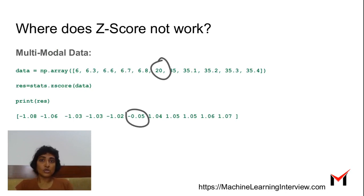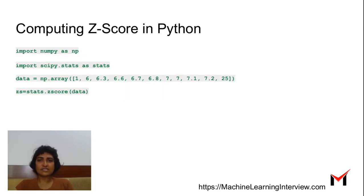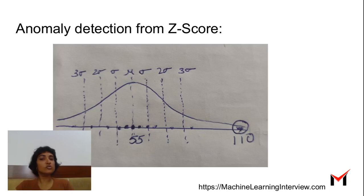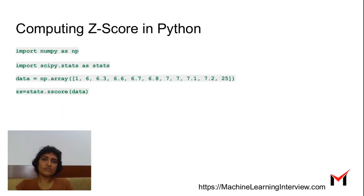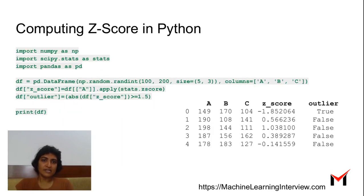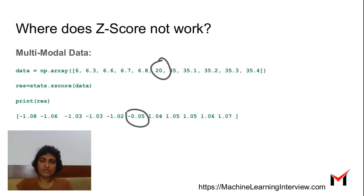Now, where does z-score not work? So z-score works when you have this kind of a nice Gaussian kind of data, where you can say if you are certain standard deviations away from the data, you're an outlier. That kind of statement is easy to make if your data is Gaussian distributed, where most of the data is around the mean. But what if most of the data is not around the mean? So what are some examples?